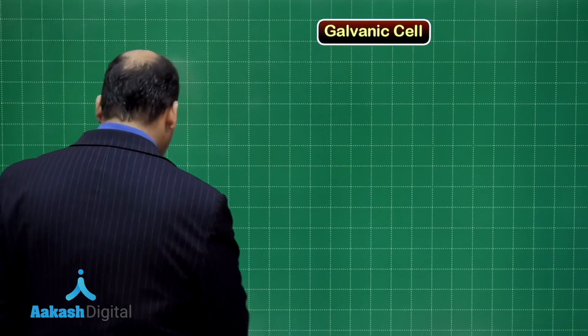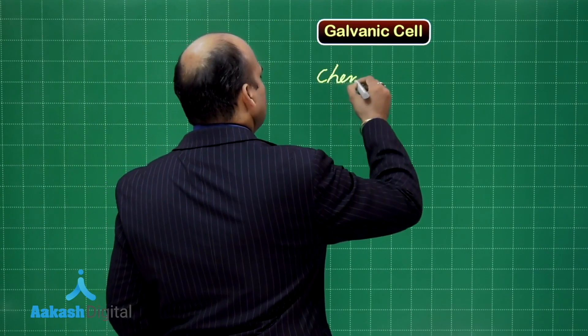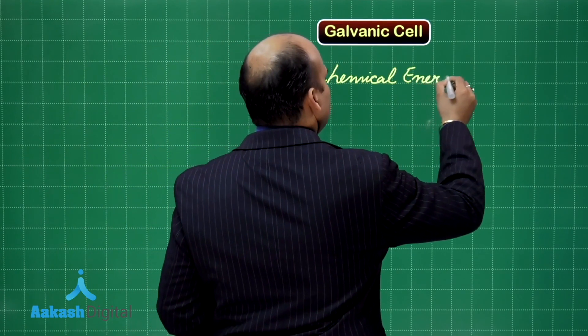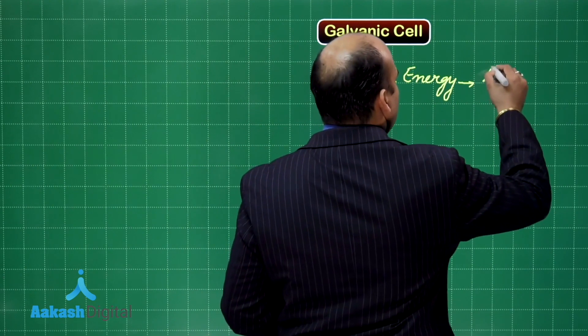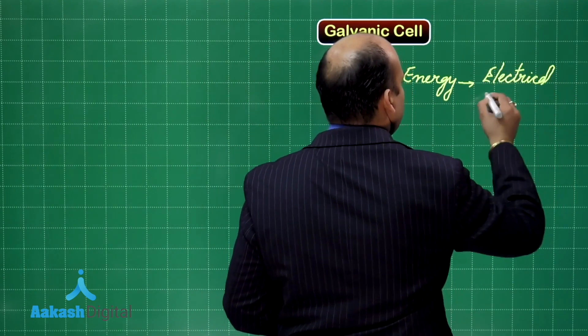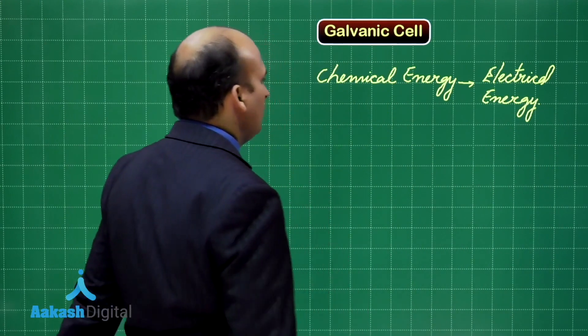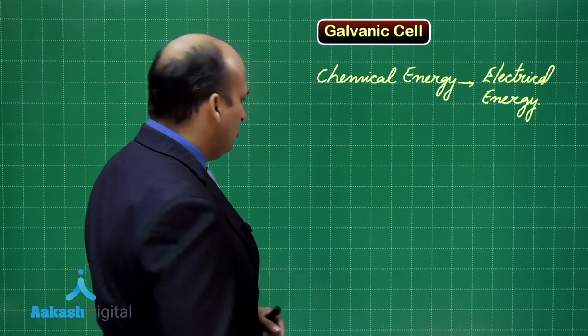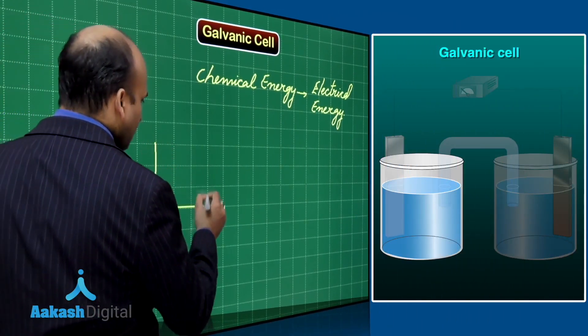What I am saying over here is that the chemical energy is getting converted to electrical energy. Now, how it is done? We are using a galvanic cell for the same. Now, what is the way in which we can construct this galvanic cell?